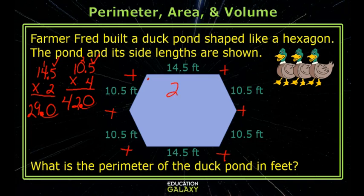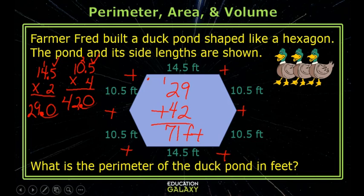The last step is to add these measurements. Since the decimal part was zero, I can leave it off. So the perimeter of the duck pond is 71 feet.